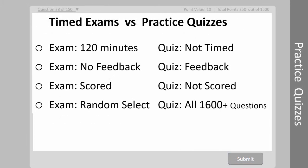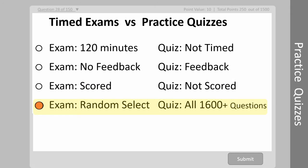Now I'm going to discuss the difference between timed exams and practice quizzes. The timed exams are limited to 120 minutes to replicate the length of the CWI exam, while the quizzes are not timed. The exam doesn't provide instant feedback, but you do get the results at the end, whereas quizzes give you instant feedback when you submit your answer. The exams are scored so you can track how well you're doing, whereas quizzes are not scored. Lastly, the timed exams will randomly select the appropriate number of questions, and the quizzes give you access to all 1,600 questions in our databank.